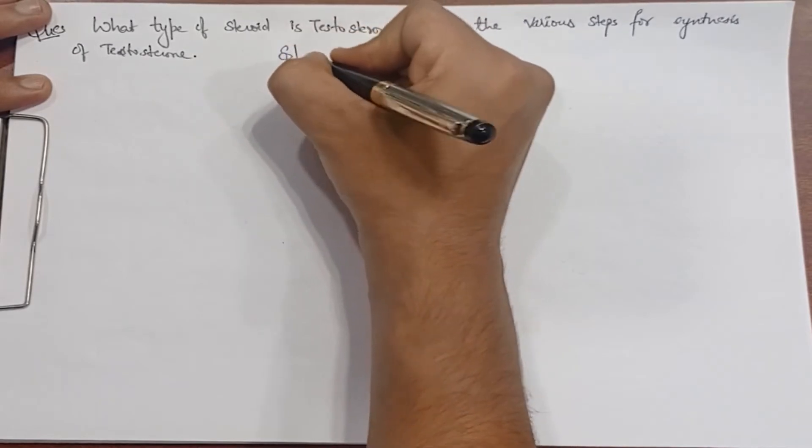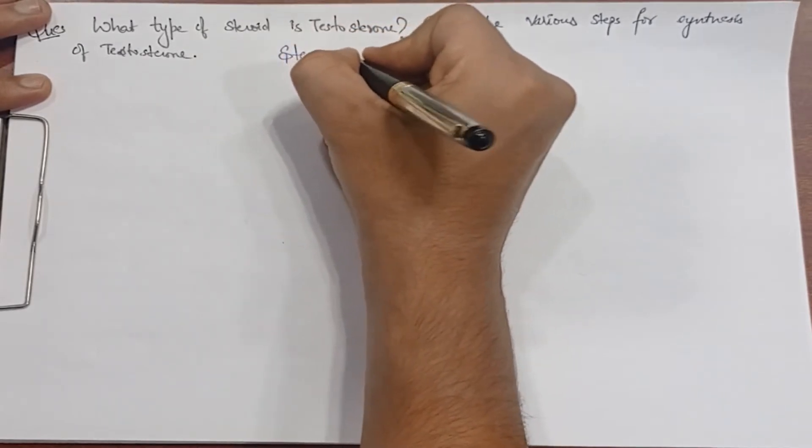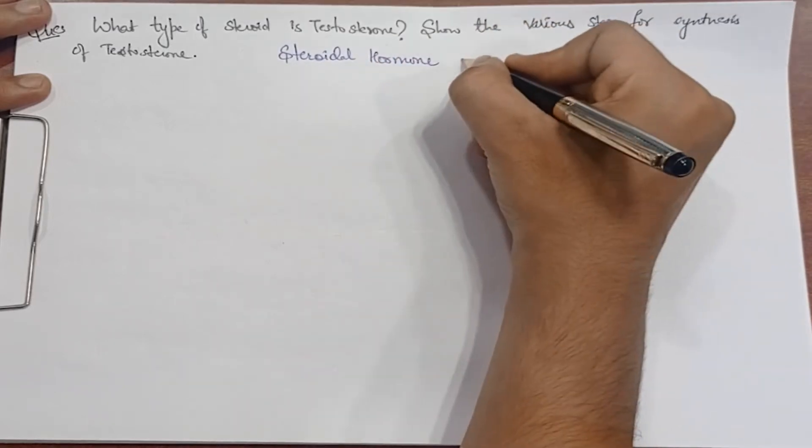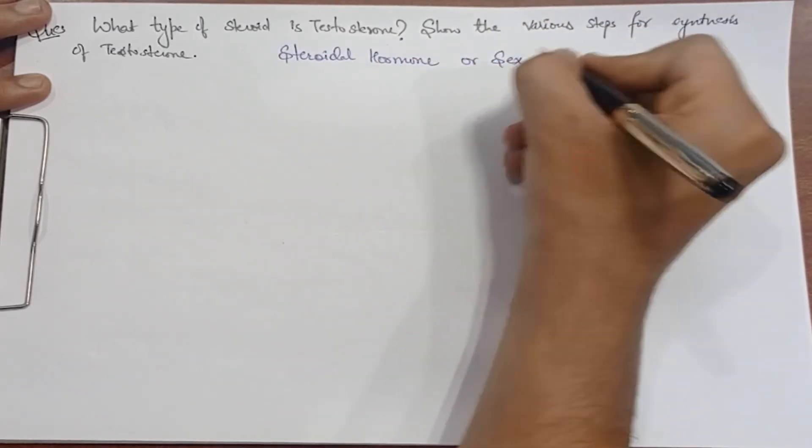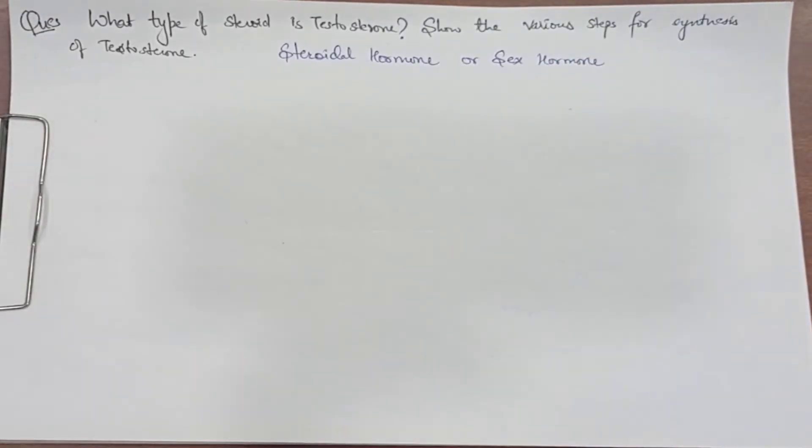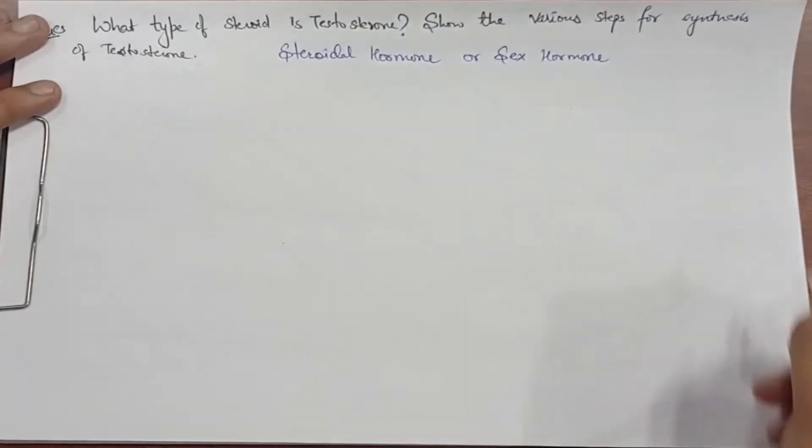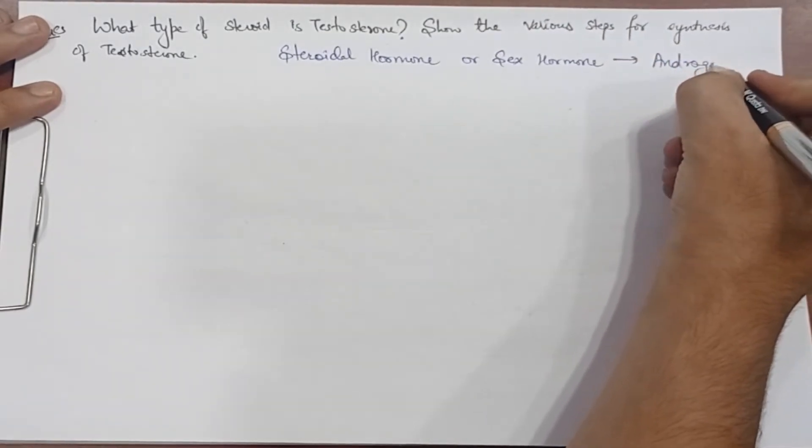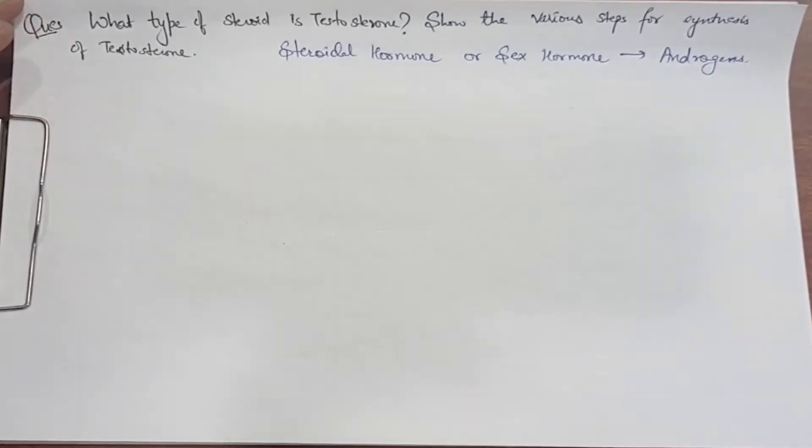Testosterone is a steroidal hormone and sex hormone that falls in the category of androgens, which is the category of male sex hormones. It is a steroidal hormone and sex hormone. Now we will take the synthesis steps and see how it will be done.